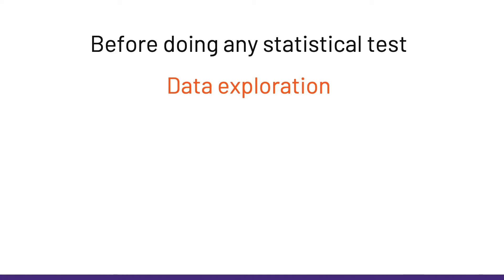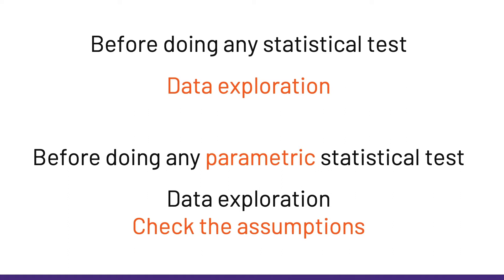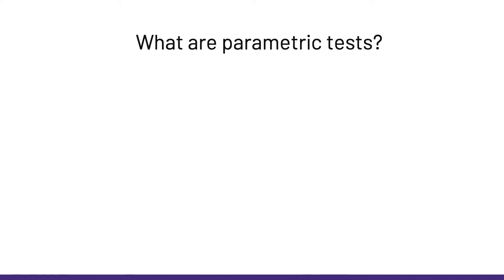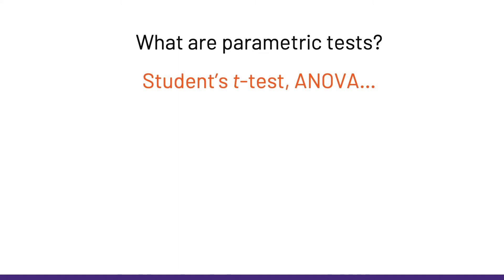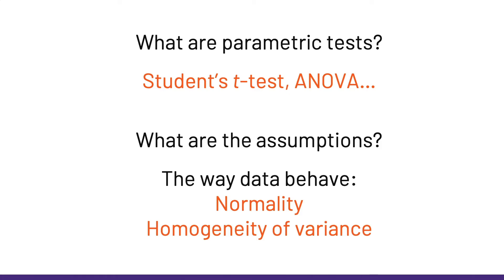Let's add some context here and be more specific. Before doing any parametric statistical test, we need to explore our data to check that the assumptions of such tests are met. What are parametric tests? Well, there are the classic ones, such as the t-test or the ANOVA. And what are the assumptions? They are about data behavior, and the two main assumptions are normality and homogeneity of variance.